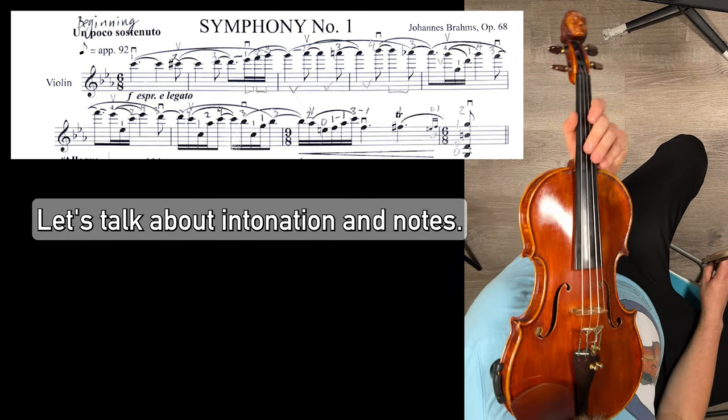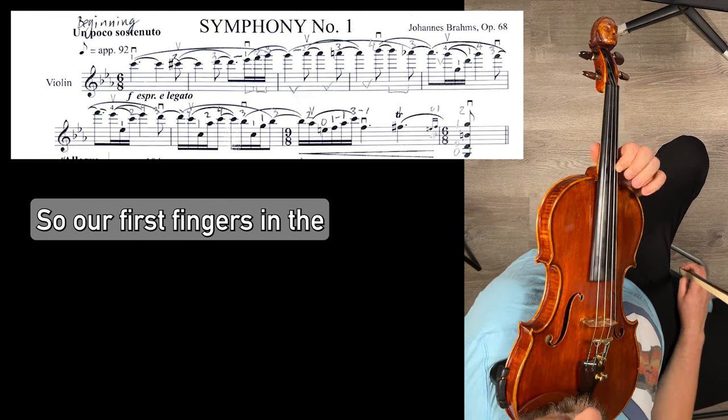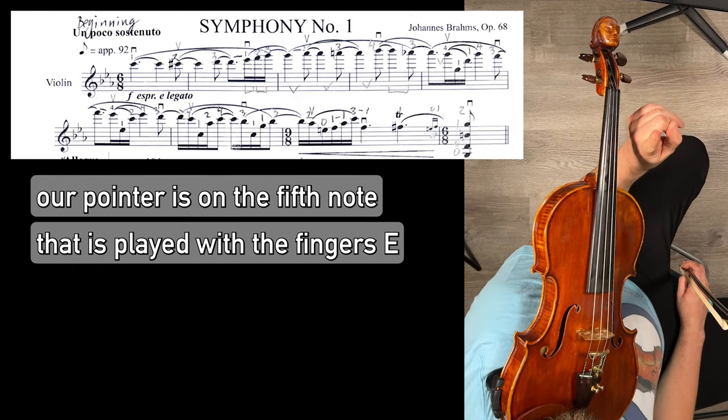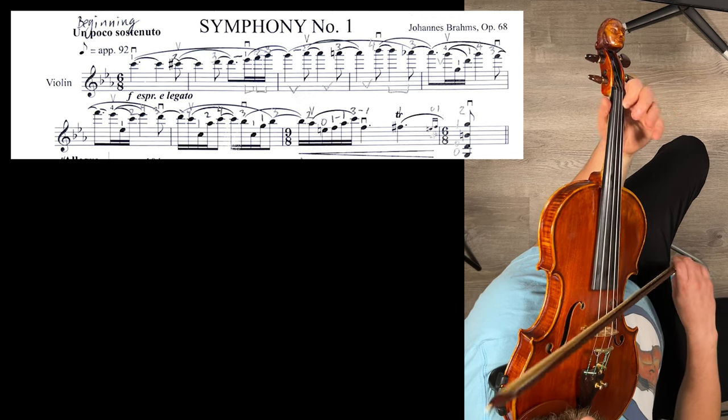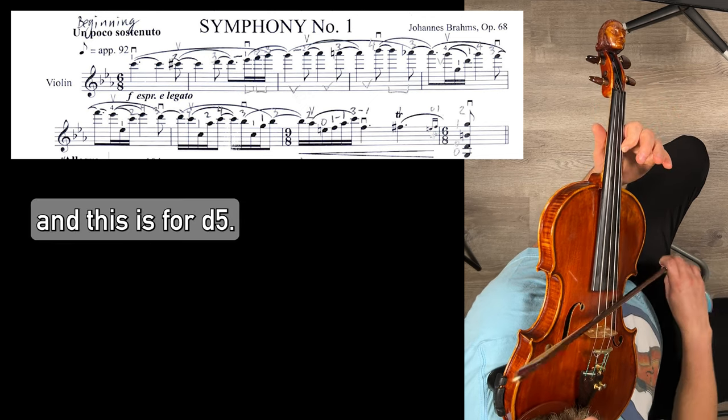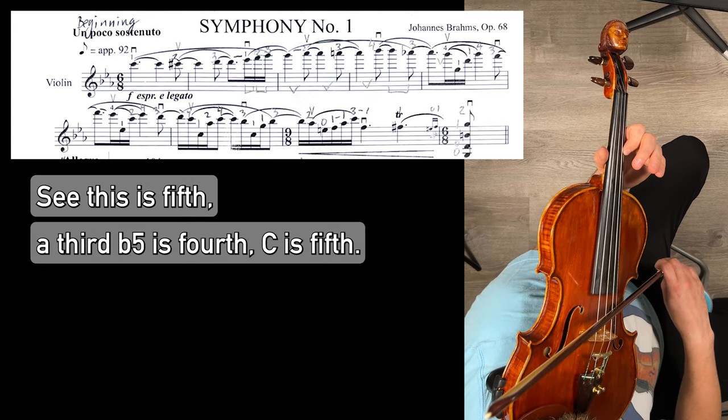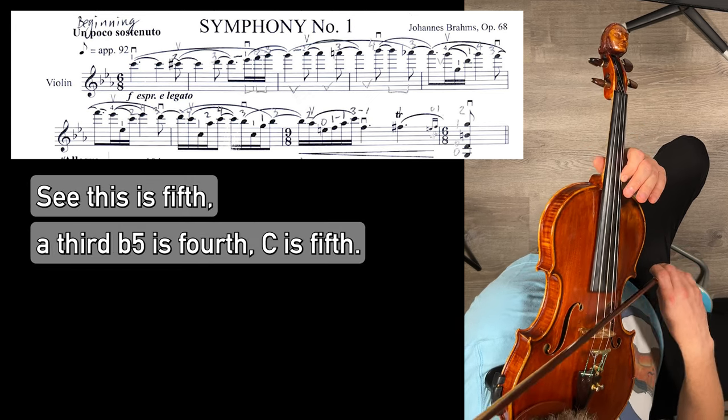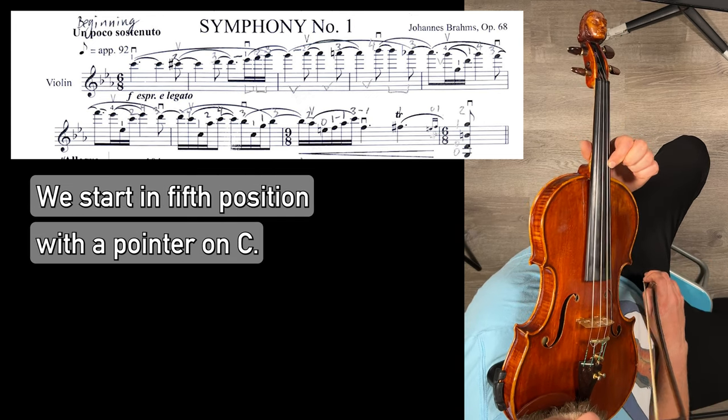Let's talk about intonation and notes. We start in fifth position. So our first finger is in the... Our pointer is on the fifth note that is played with the fingers. So E, F, G, A. This is third. B flat, C. This is fifth. A is third. B flat is fourth. C is fifth. We start in fifth position with a pointer on C.